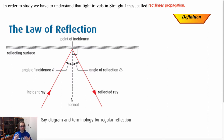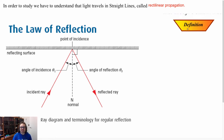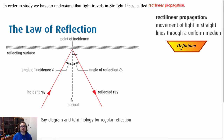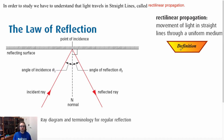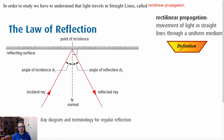Before we get into really what reflection is, we must understand that light travels in straight lines called rectilinear propagation. The exact definition of this is movement of light in a straight line through a uniform medium, because we're going to find out that light will change as it changes medium.